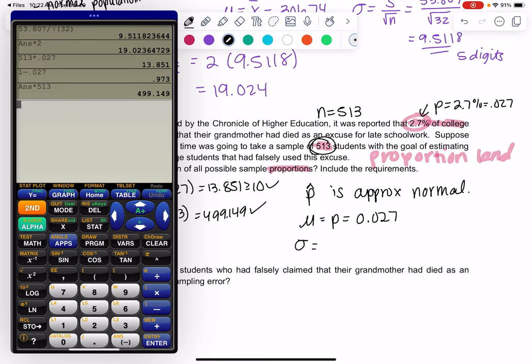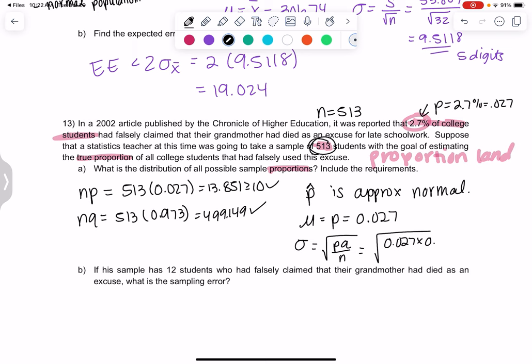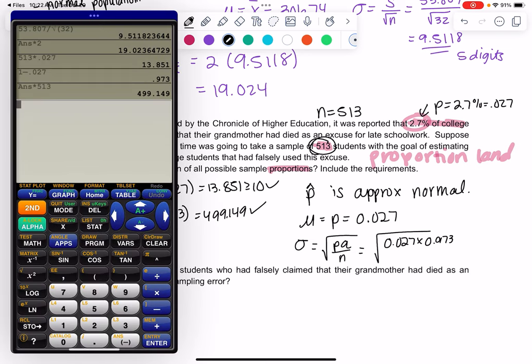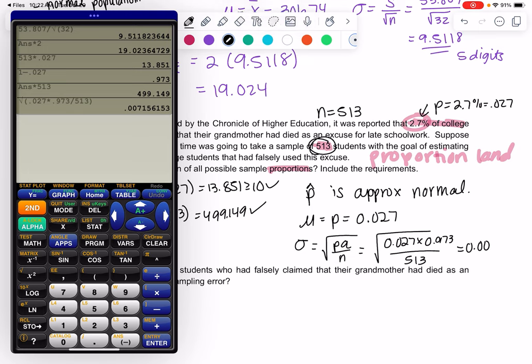And then the standard deviation, you might have to look back at your formulas. It was P times Q over N, all in a square root. So go ahead and give that a try. I lost Q. Q was .973, and then sample size was 513. Pause so you can calculate this on your own. Make sure you have the division. Make sure all three numbers are inside the square root as well. We get a very small standard deviation. So the zeros don't count as digits. So it'll be 7, 1, 5, 6, 2.